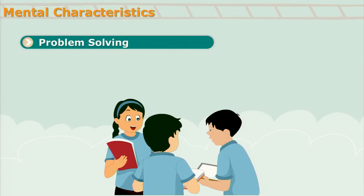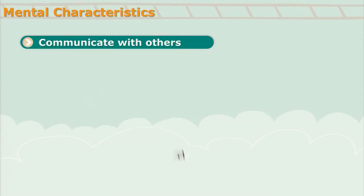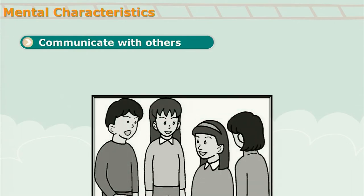Problem solving. At this stage, as their mental development has taken place, they develop problem solving skills, and the difficulty level of problems they can tackle increases. They also have a lot of ideas and thoughts and want to exchange them with others. So in order to exchange their ideas and thoughts, they like to communicate with others.